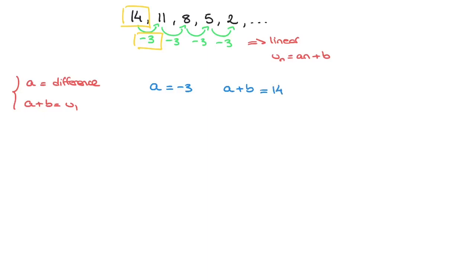And since a is negative 3, that's negative 3 plus b equals to 14. Now adding 3 to each side of that equation leads to b equals to 14 plus 3. And finally, b is equal to 17.